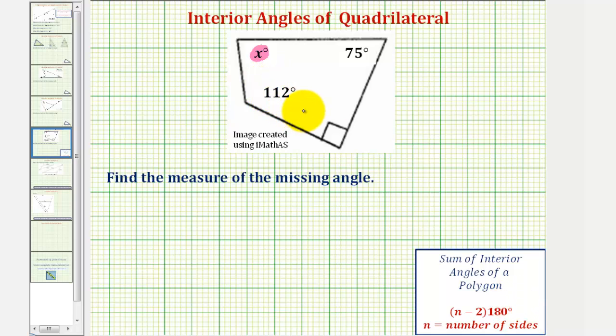So because we have a quadrilateral, n is equal to four, and therefore the sum of the interior angles would be equal to the quantity four minus two, or just two, times 180 degrees, which is equal to 360 degrees.